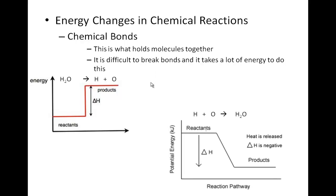The opposite kind of reaction is something like this, where we have H and O coming together and forming H2O. H and O are reactants, and they have a whole bunch of stored potential energy. In order for them to come together and form this chemical bond and form H2O, they need to lose a lot of that potential energy in order to become a little bit more stable. So they lose a whole bunch of energy, and they are able to form this chemical bond. Therefore, the products — in this case H2O — have a lot less energy.